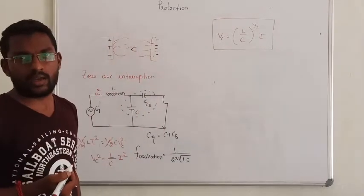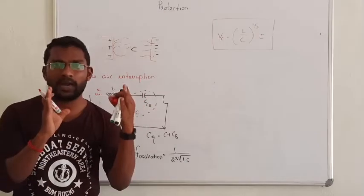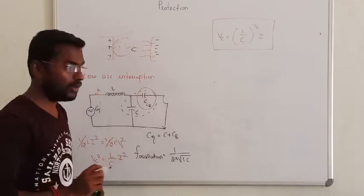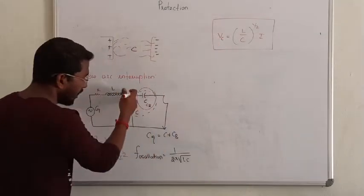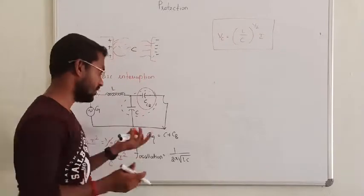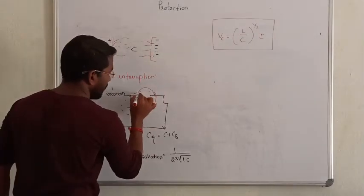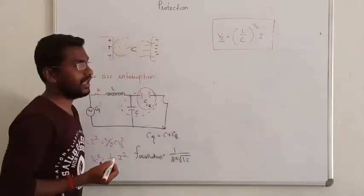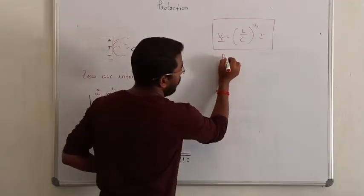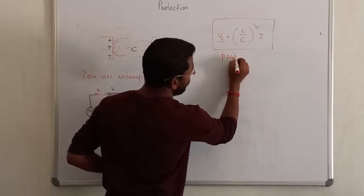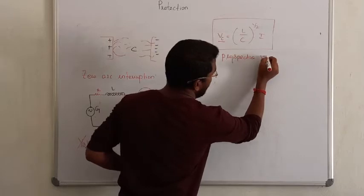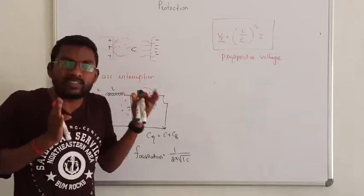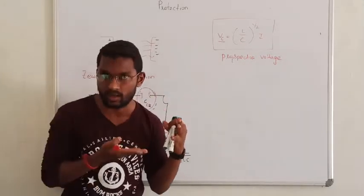So this is the voltage drop across the capacitor. Since both capacitors — the transmission line capacitance and the circuit breaker capacitance — are connected in parallel, the voltage across the circuit breaker contacts is Vc = √(L/C) × I. This voltage is known as the prospective voltage, which is the striking voltage — the voltage drop across the circuit breaker during a fault.